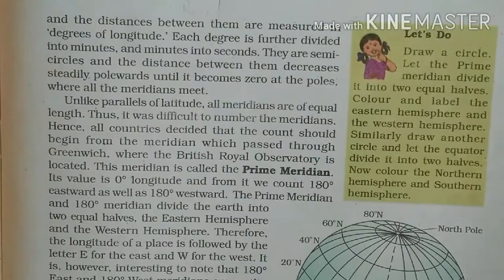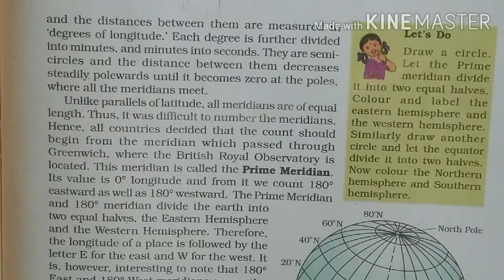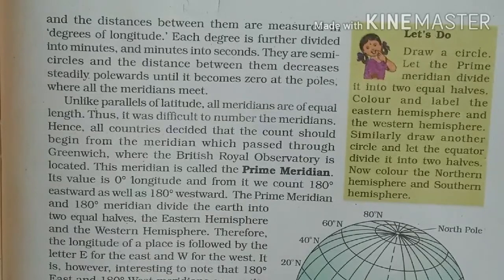Jo longitudes wali jo line hoti hai, unko hum meridian of longitudes bhi kehte hain. Jo vertical lines hoti hain unko meridian of longitudes kaha gaya hai. Aur jo North Pole se South Pole tak longitudes hoti hain, unke beech ki distance is called degrees of longitude. The first degree is divided by minutes and the second is divided by seconds. The semicircle is the same as the latitudes from the equator.